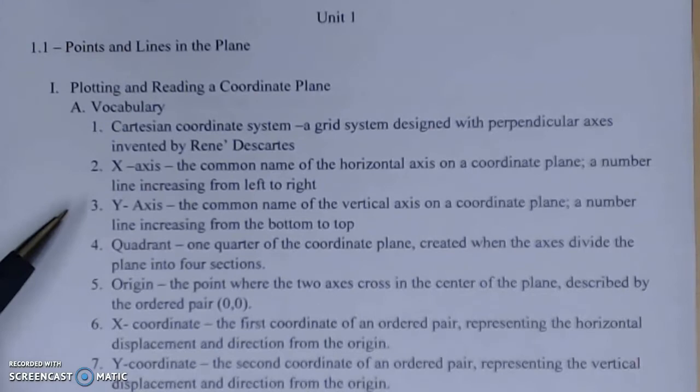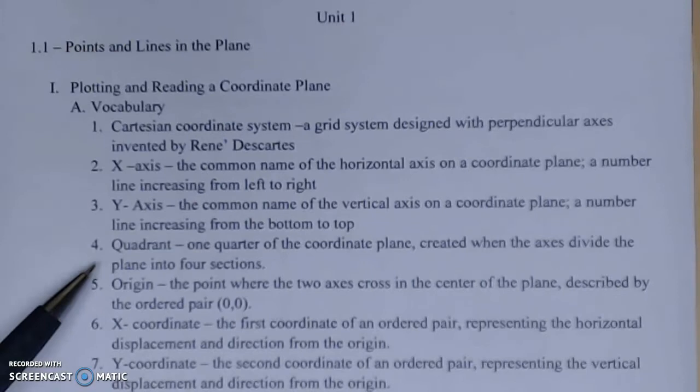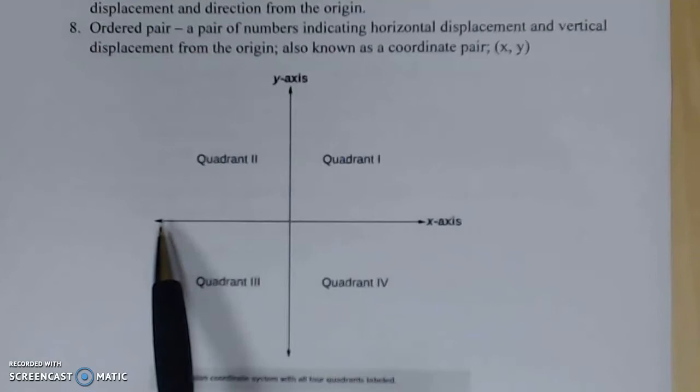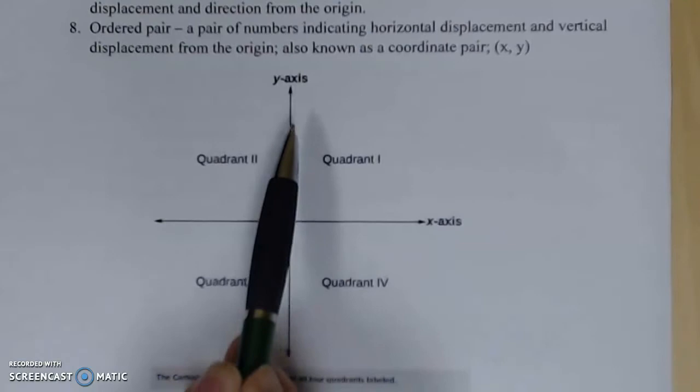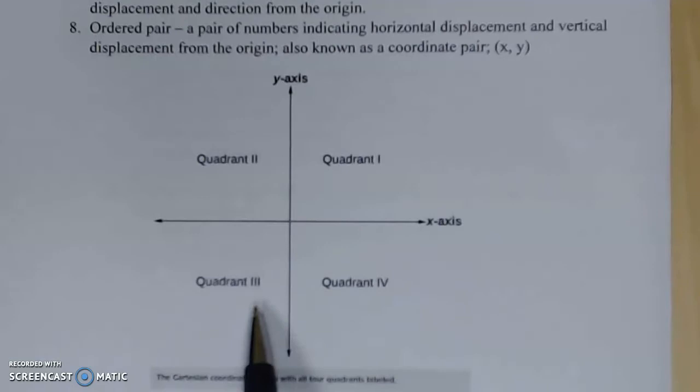Once we have these two axes, we've got a vertical and a horizontal, which separates it into quadrants. One quarter of the coordinate plane created when the axes divide the plane into four sections. You can see here, I have my x-axis increasing from left to right, then your y-axis that increases from the bottom to the top, and then you have your quadrants 1, 2, 3, and 4.